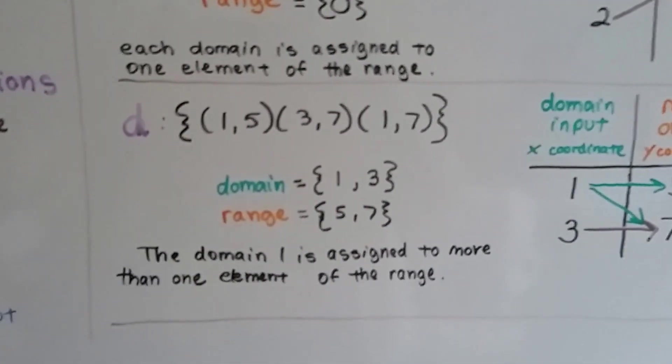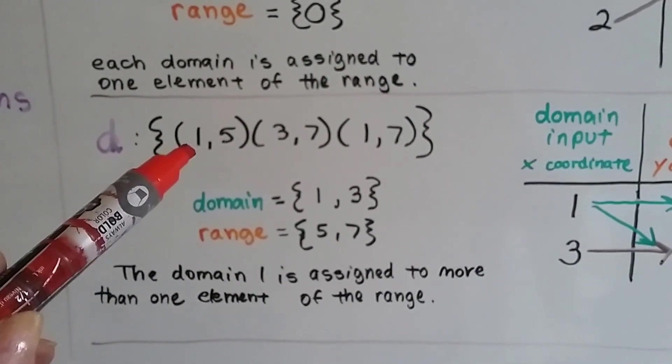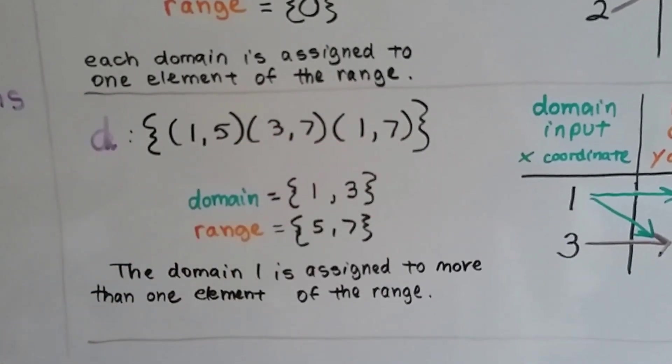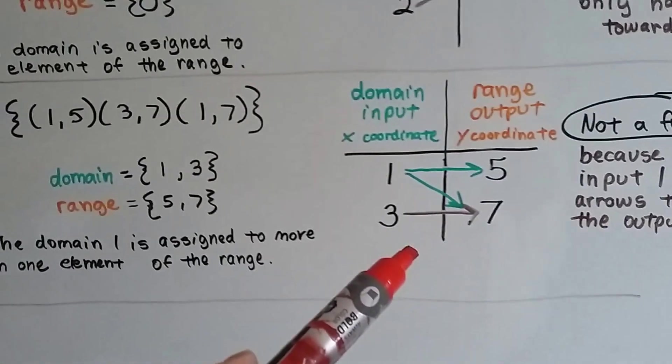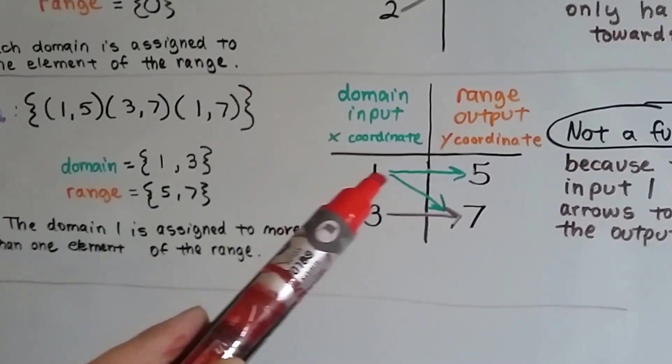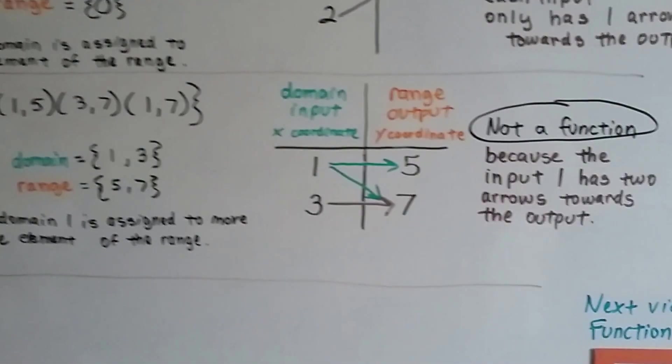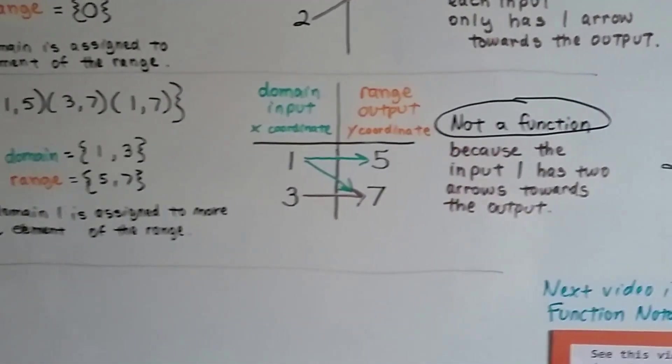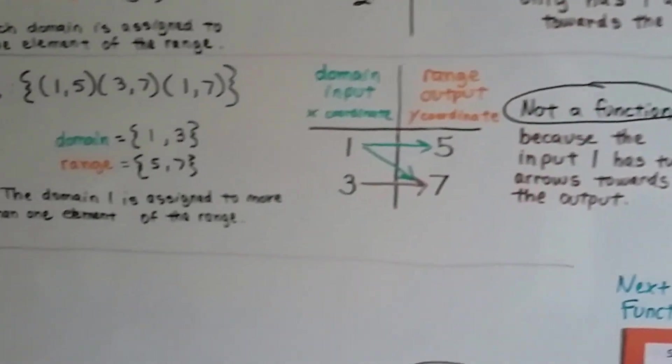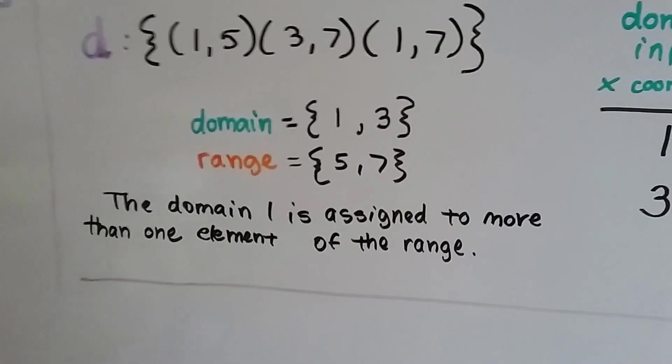Like, what's going to happen with this one? So, in this set D, we've got the set of ordered pairs of (1,5), (3,7), and (1,7). And, we put them in a little function table, we can see that the 1 is going to the 5 and the 7. Well, it can't do that. So, this is not a function because the input 1 has two arrows heading towards that output. The domain 1 is assigned to more than one element of the range.